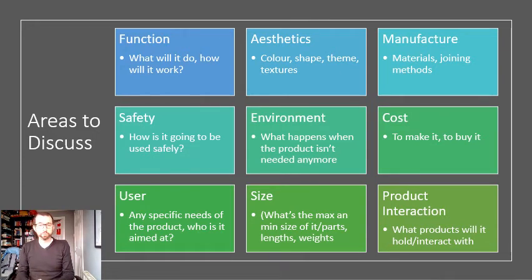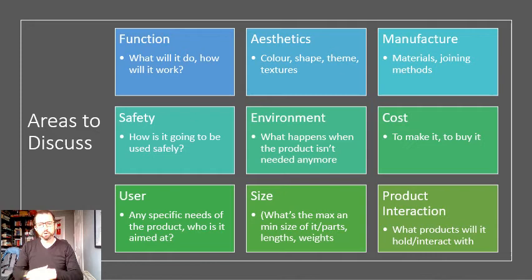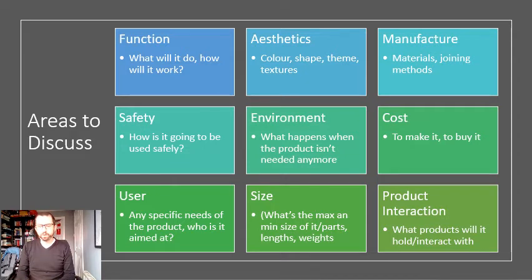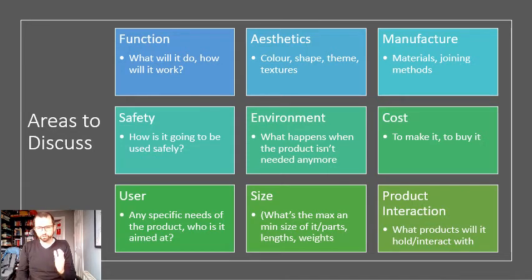Beyond the big three, we might have further points covering safety, environment, cost, user, and size. We might also talk about product interaction — a slightly woolly one — where we discuss how your product is going to interact with other products. Is it going to attach to a wall? Sit on a desk? Hold something else? Be really specific: rather than saying it must hold a pen, say it must have a hole that is 10 millimetres wide for a pen to sit in. The word 'specific' is right there at the front of 'specification' — be really clear and detailed.